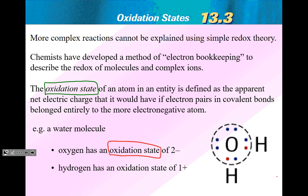Oxidation state is just a different way to express what is going on — did something lose or gain electrons? Here's your oxygen; it's gained these two electrons, so it has an oxidation state of negative two. Hydrogen, on the other hand, has an oxidation state of plus one — it actually lost electrons. Sometimes it gains electrons. Hydrogen is funny; depending on whether it's in the first or second part of a molecule, it could be negative one or positive one.